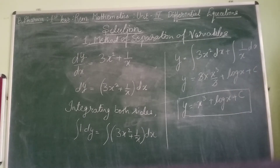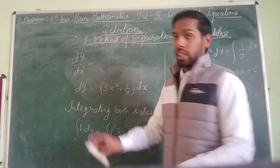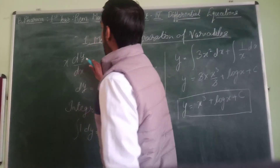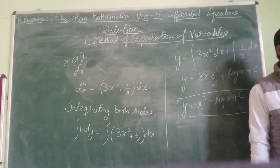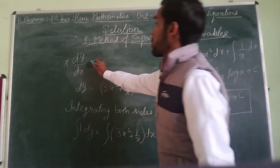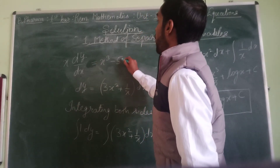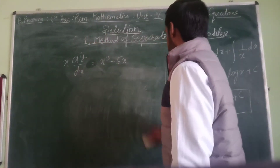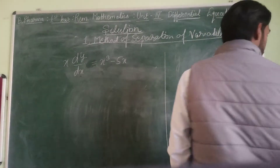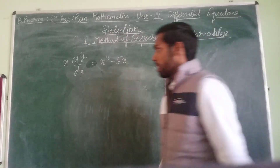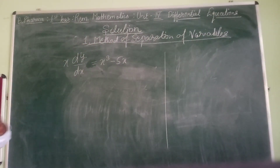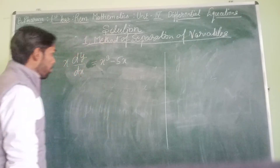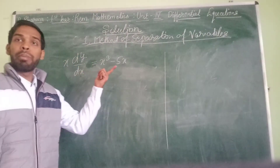Similarly, let us do one more question. Find the general solution of x·dy/dx = x³ − 5x. We are using the first method, method of separation of variables. First, divide the whole equation by x to separate the variable x, giving dy/dx = x² − 5.